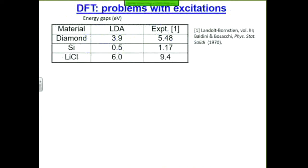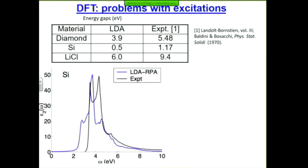Here are three materials — they're all insulators. The band gaps are measured in electron volts; look on the right, they're all positive. The LDA-type theory gives you these numbers, so there's some qualitative agreement — positive numbers are positive — but the errors are on the order of half to one or two electron volts. Here is what you would calculate in blue based on LDA: the optical absorption of silicon versus photon frequency. You see it starts picking up around two electron volts, but the black experimental curve starts picking up at three electron volts.